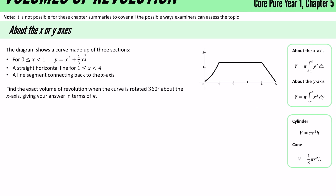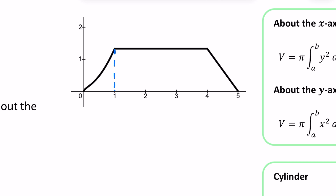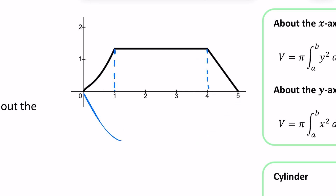About the x or the y-axis — we'll see which one it's for in this question. The diagram shows a curve made up of three sections: for x between 0 and 1, it is the curve y = x² + (1/3)x^(1/2); a straight horizontal line for x between 1 and 4; and then a line segment connecting back to the x-axis. Find the exact volume of revolution when the curve is rotated 360° about the x-axis, giving your answer in terms of π. We're going to have three different sections — when rotated, they create a three-dimensional shape.